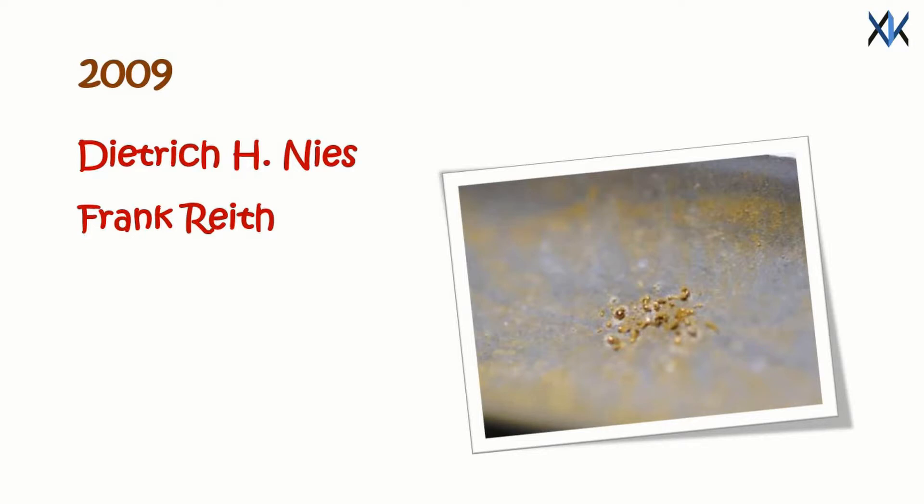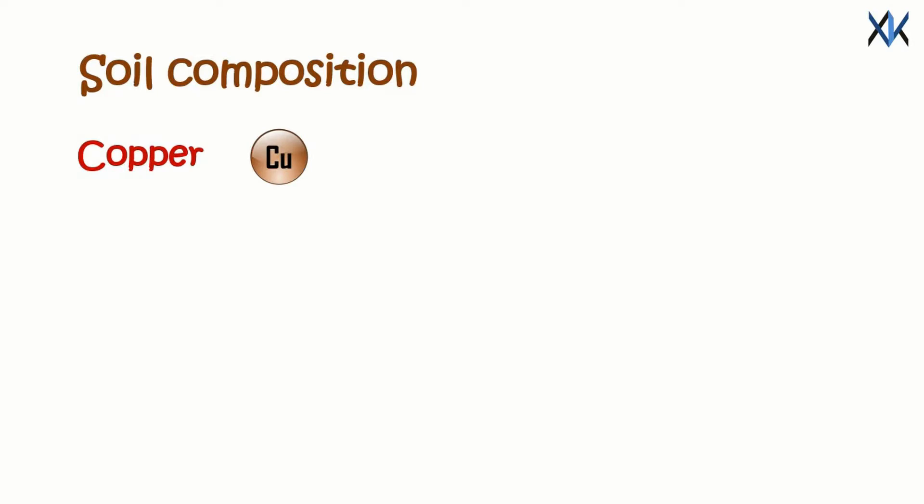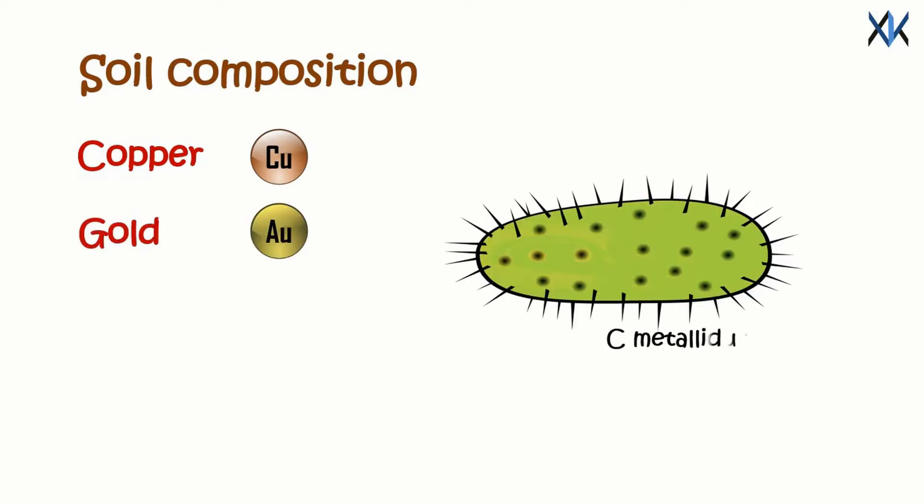But the exact process that takes place in this gold formation remained unknown. But now the researchers have finally been able to solve the mystery. The soil in these areas has deposits of gold and copper. Gold enters the bacteria the same way as copper. Copper is a vital trace element for C. metallidorans, however it is toxic in large quantities.